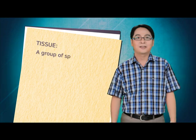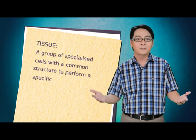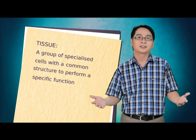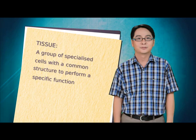Cell organisation occurs in multicellular organisms to enable the organisms to carry out the various functions systematically and efficiently. A group of specialised cells with a common structure performing specific functions forms a tissue.